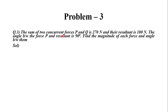The sum of two congruent forces P and Q is 270 Newton and their resultant is 180 Newton. The angle between the resultant and force P is 90 degrees. Find the magnitude of each force and the angle between them.